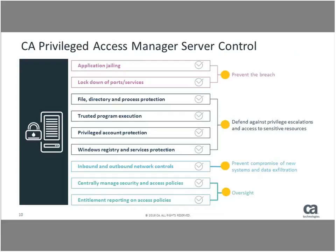Specific capabilities you can deliver using PAM Server Control include application jailing — confining an application to specific actions and blocking it from going outside that box, which is an effective defense against zero-day vulnerabilities. You can lock down which incoming and outgoing TCP/IP services you want to control, prevent unauthorized stopping and starting of Windows services, control access to files and directories, and prevent processes from being terminated — such as your database process, application process, or syslog process. We can defend the syslog process from being terminated by an unauthorized user even if they're running as root, so attackers can't silence your logging.